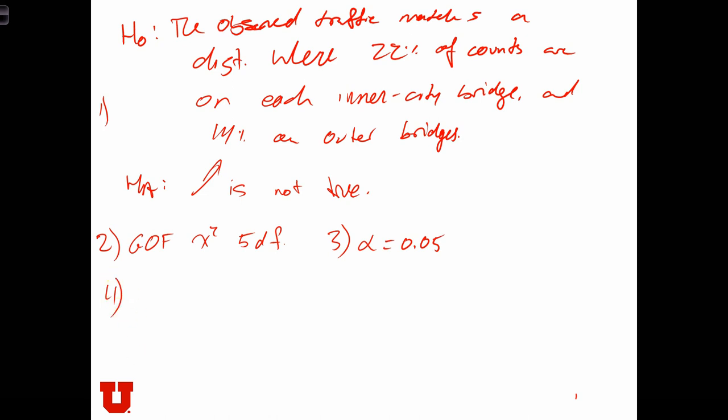Step four, we have the same picture as before. Nothing's really changed. So we have a critical value over here of 11. This is chi-squared. And step five is to now calculate our statistic.